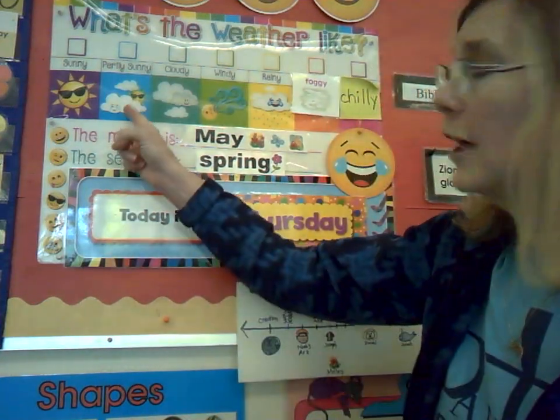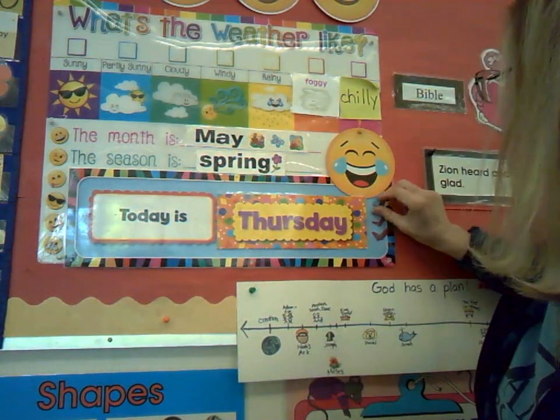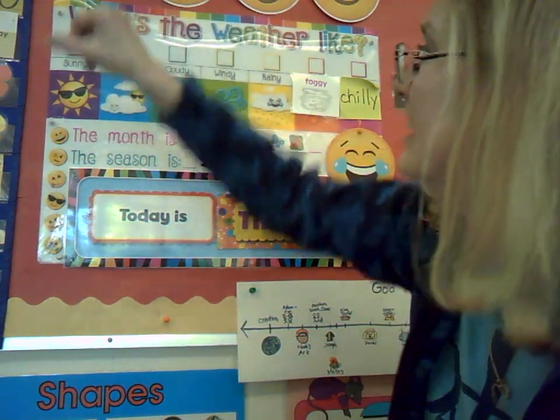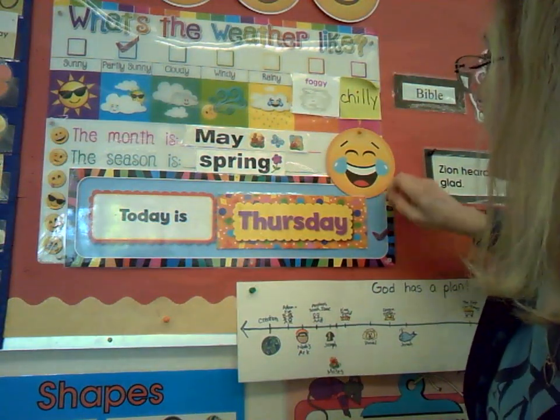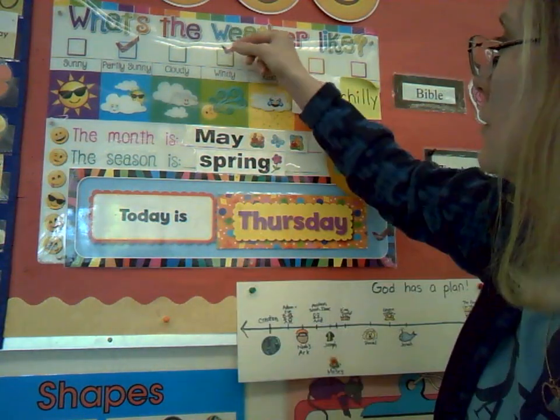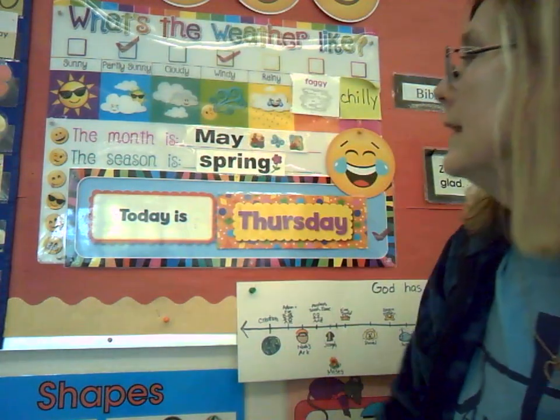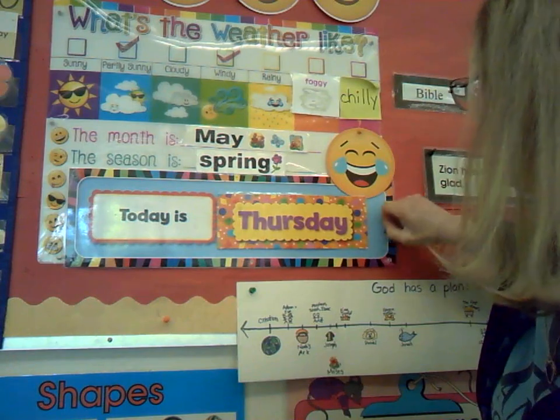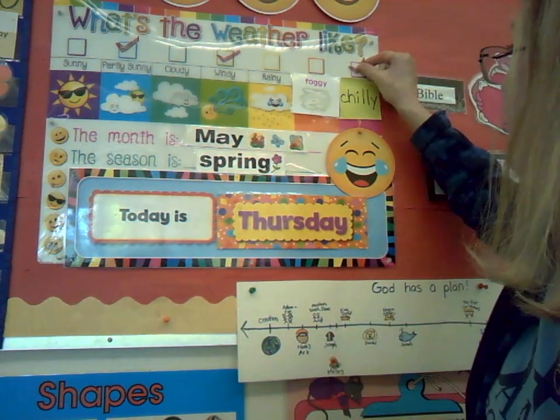Today, though, let's take a look outside. I see some sunshine out there, some clouds too. So let's go with the partly sunny section of the weather chart. It's a beautiful day. And it is a little windy out there, so let's put windy on our weather chart. And I think we can also go with chilly — let's do chilly as well.